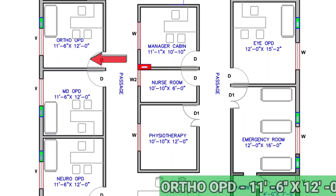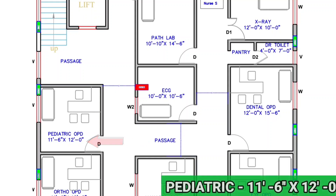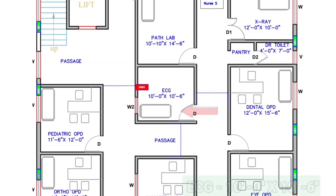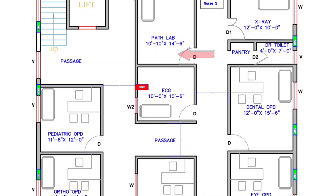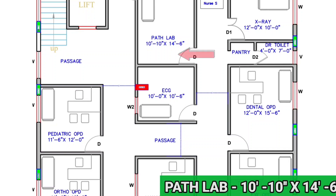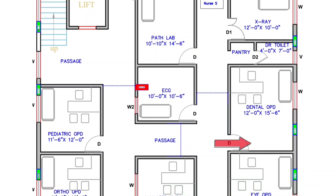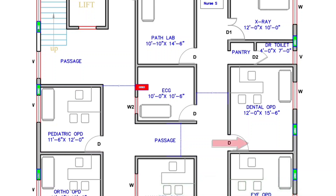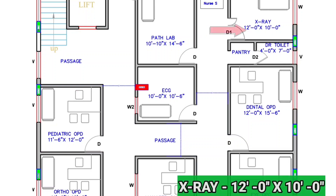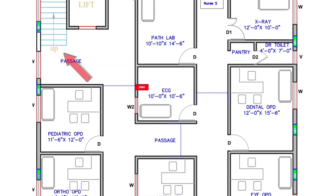On the back of the IOPD, there is an emergency room sized 12 feet by 16 feet. On the left-hand side of the physiotherapy and emergency room, there is an MDOPD room sized 11 feet 6 inches by 12 feet. In front of the MDOPD, we have ortho OPD sized 11 feet 6 inches by 12 feet. In front of ortho OPD, we have pediatric OPD sized 11 feet 6 inches by 12 feet. On the right-hand side, we have an ECG room sized 10 feet by 10 feet 6 inches, a path lab sized 10 feet 10 inches by 14 feet 6 inches, a dental OPD sized 12 feet by 15 feet 6 inches, an x-ray room sized 12 feet by 10 feet, and lift and staircase in front of the pediatric OPD. This is the total explanation of the ground floor.